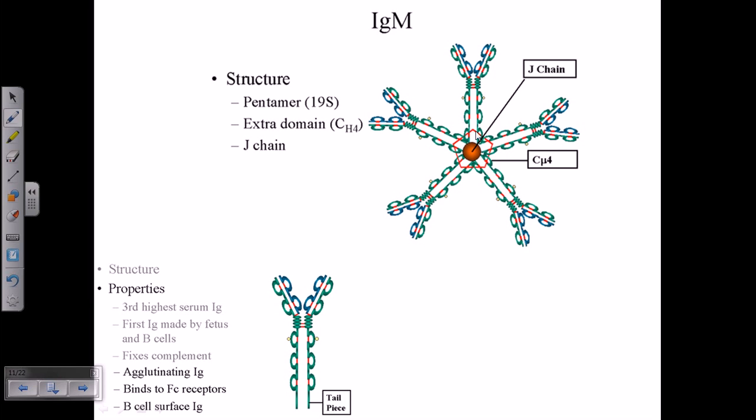IgM has a pentameric structure, with monomers linked via disulfide linkages using a small peptide fragment called the J chain.